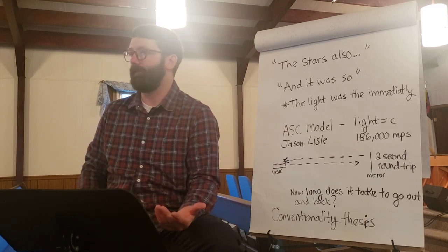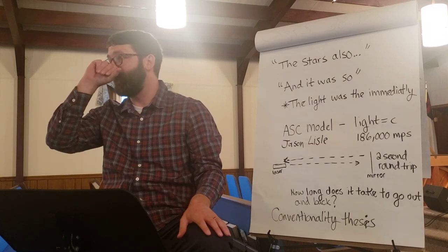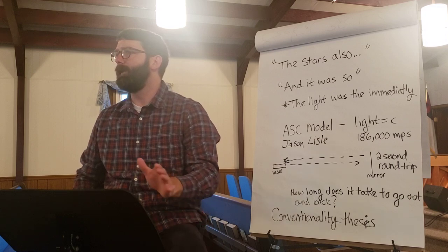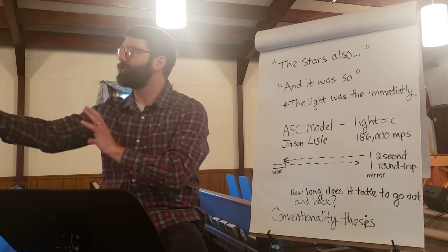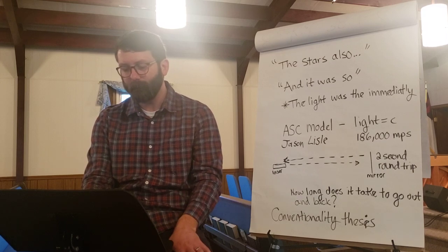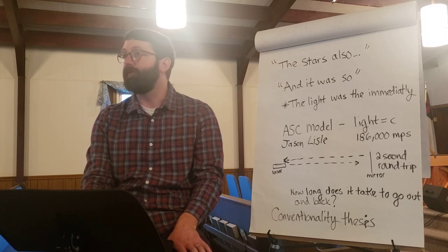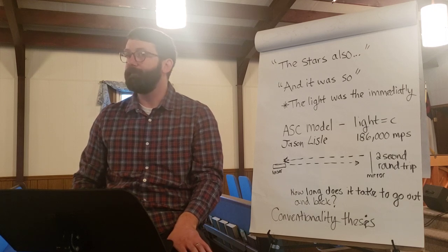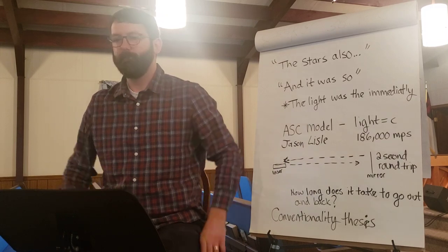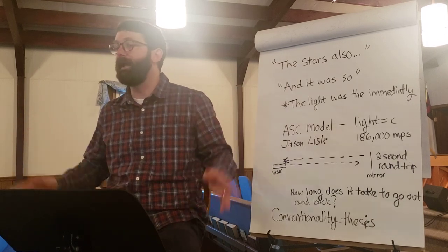There are critics of this model as there are of any scientific model, but it is allowable within general relativity — there's nothing in it that contradicts general relativity. It is possible that God could be using some kind of convention like this to get light to Earth instantaneously. This fits very well with the text, because Genesis 1:15 says 'to give light on the earth, and it was so' — implying that as soon as God created them, it immediately happened. And it could still be a miracle — God using miraculous means to allow us to see things so far off.